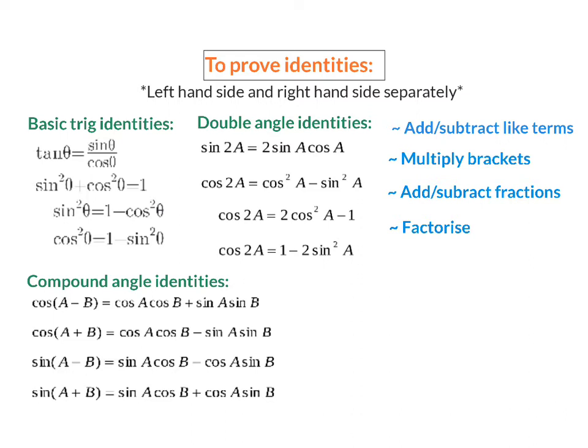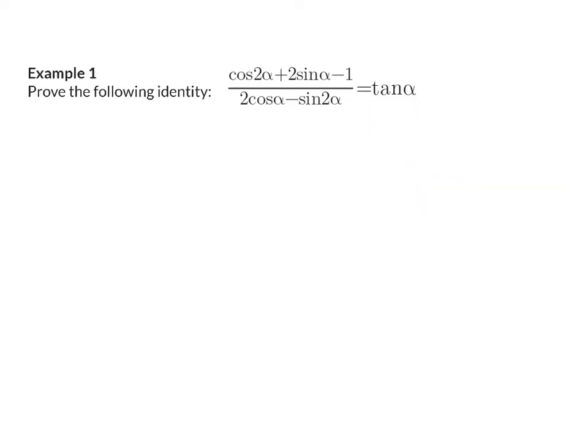Let's have a look at a few examples. When proving identities, it is always a good idea to start by changing all the tan functions to sin over cos, and by changing double angles using our double angle identities into single angles. We need to choose a side to start on, and it's always good to start on the side that seems to have more to simplify. In example one, that is our left-hand side.